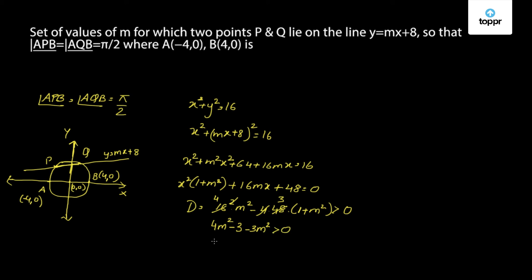Which means m² - 3 is greater than 0, which implies (m - √3)(m + √3) is greater than 0, which implies m belongs to (-∞, -√3) union (√3, ∞).